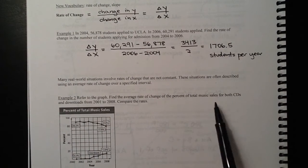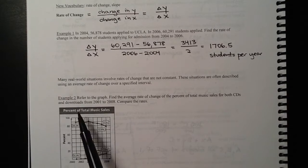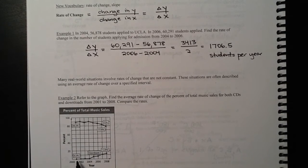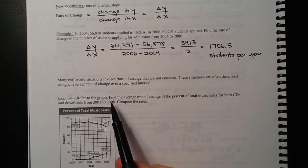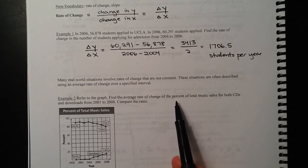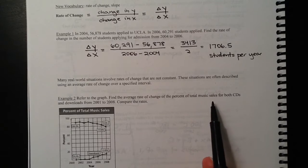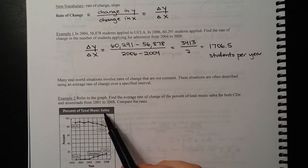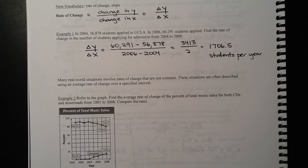We've got this chart here that compares music sales for CDs and downloads. You can see that downloads are still selling less than CDs, but CDs are going down, downloads are going up. So we can use this chart to find what they're asking us for. We want to find the average rate of change of the percent of total music sales for both CDs and downloads between 2001 to 2008. So let's start with CDs.